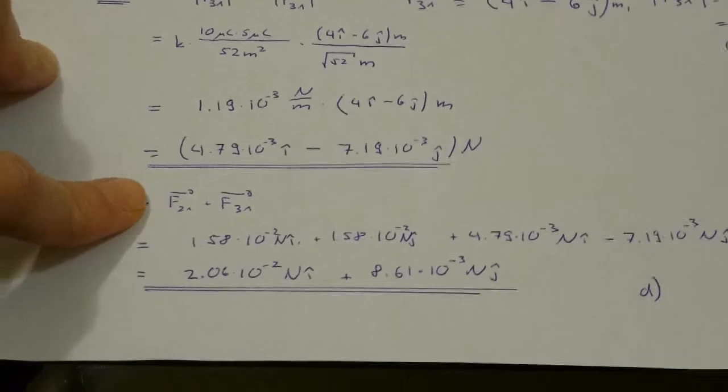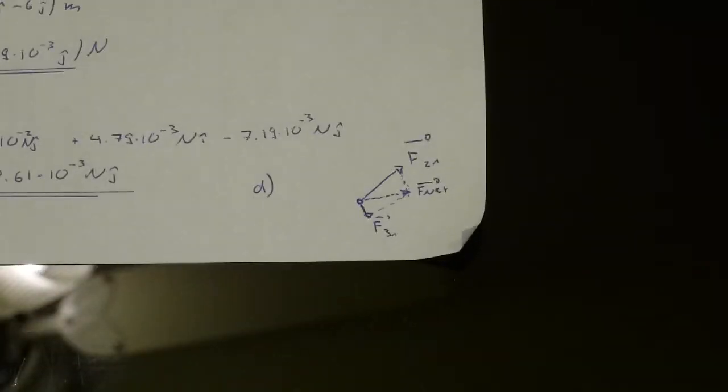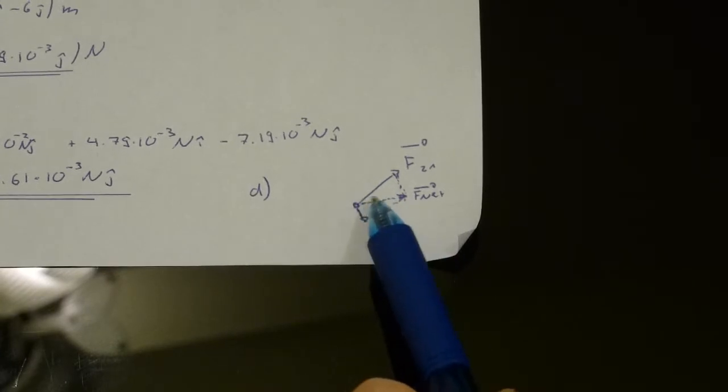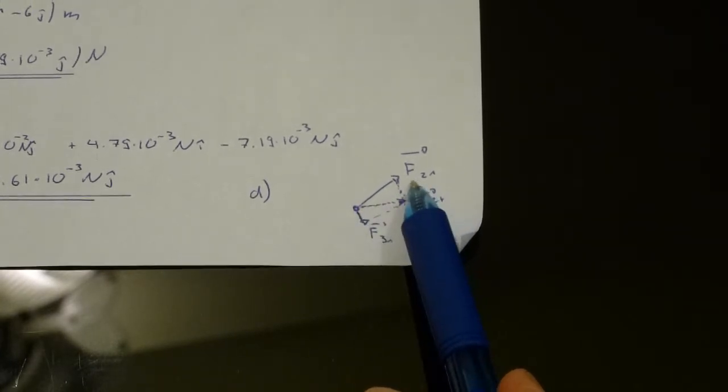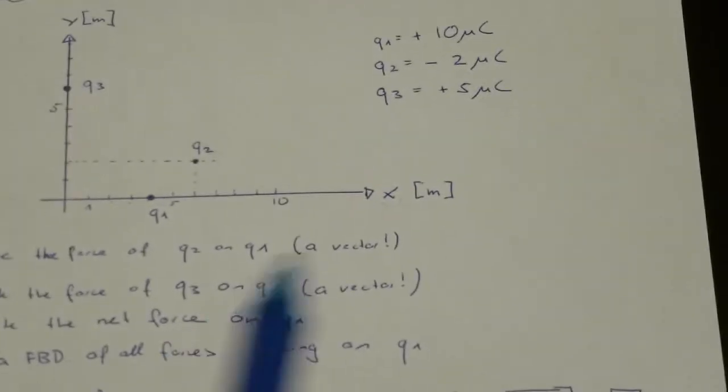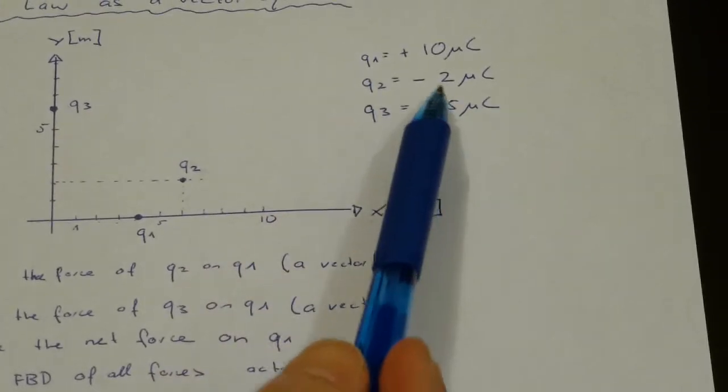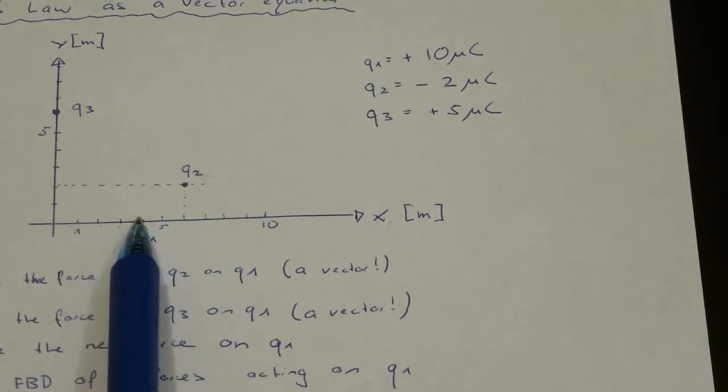Now if we sketch the whole thing: force from 2 on 1. 2 is actually attracting 1 as they have opposite signs. So 2 is attracting 1 in that direction. So you can put that somehow like this in a little sketch.